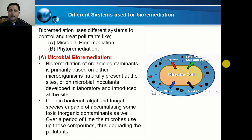Different microorganisms can be used for this purpose — bacterial, algal, and fungal species — which are capable of accumulating some toxic inorganic contaminants. Over a period of time, microbes use up these compounds and thus degrade different types of pollutants. They have different abilities: some microorganisms produce different enzymes, some produce biodetergents, and some can bioabsorb the pollutants.